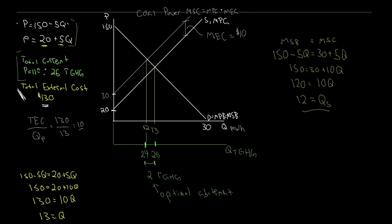So we've figured out optimal pollution and optimal abatement — but how do we actually fix this negative externality? How do we force society to get to the social optimal? This will never happen on its own, because the market consists of private individuals acting in their own best interest, landing at the private optimal. The only way to reach the social optimal is through government intervention — changing the incentives to get us to a socially optimal outcome.